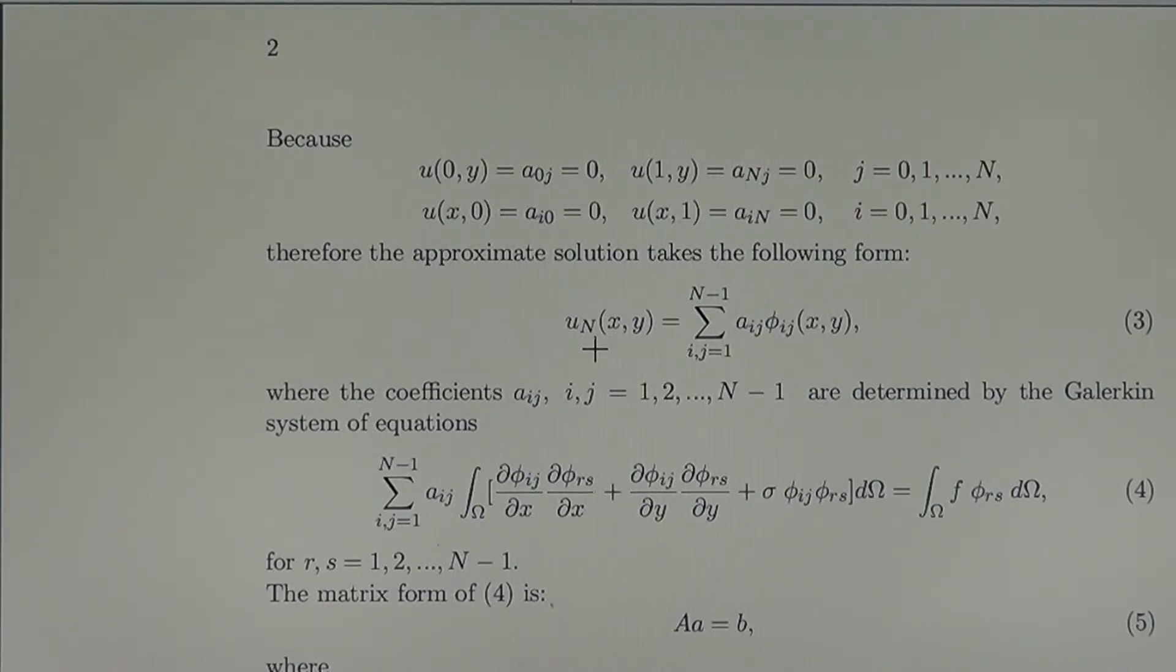We start from one, not from zero as before, and we end at N minus one, not at N. This is because the coefficients a zero j are zero, a n j are zero, and the same a i zero and a i n are also zero.